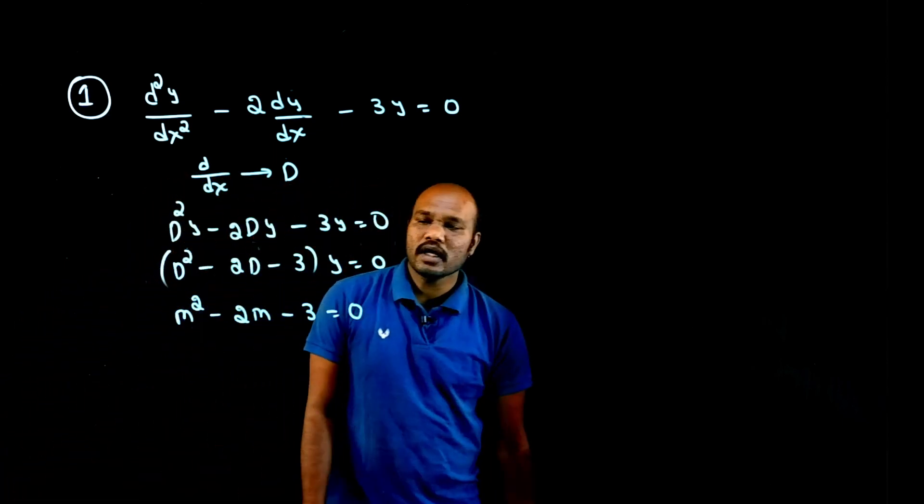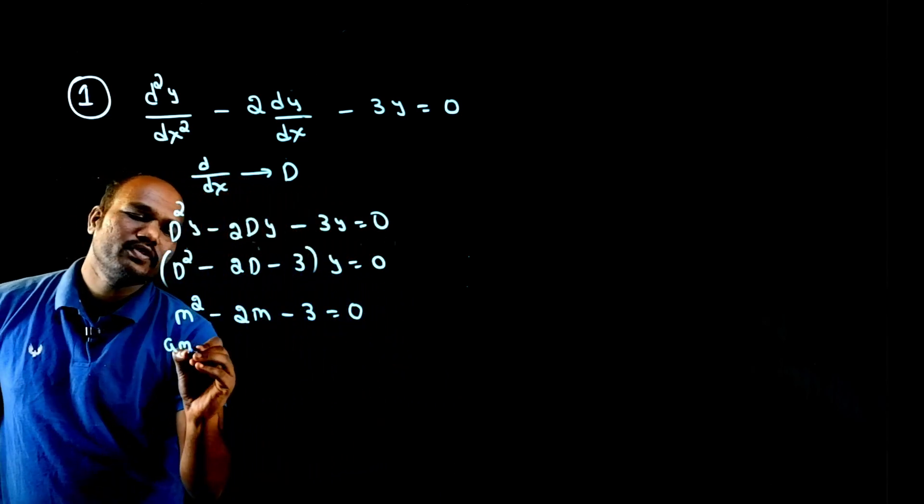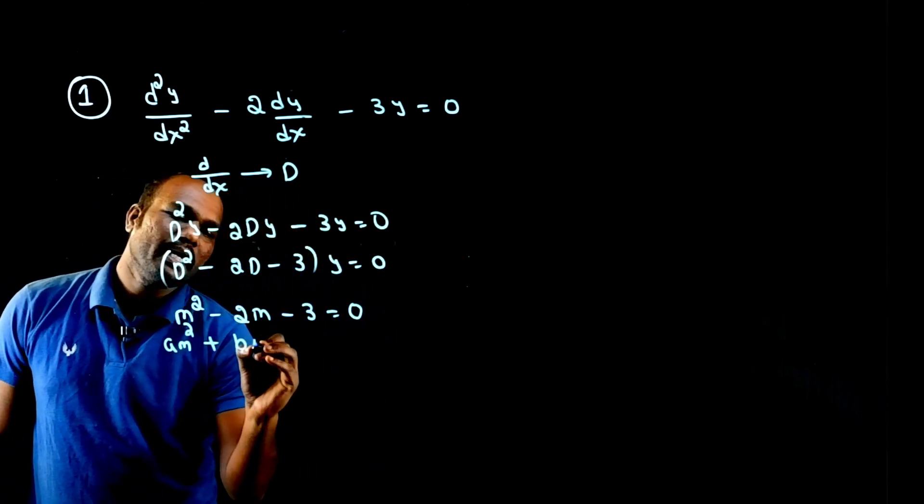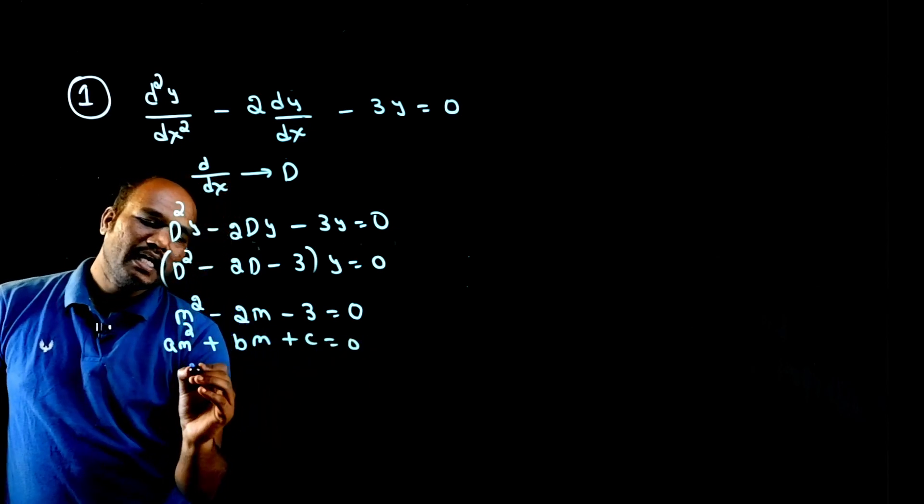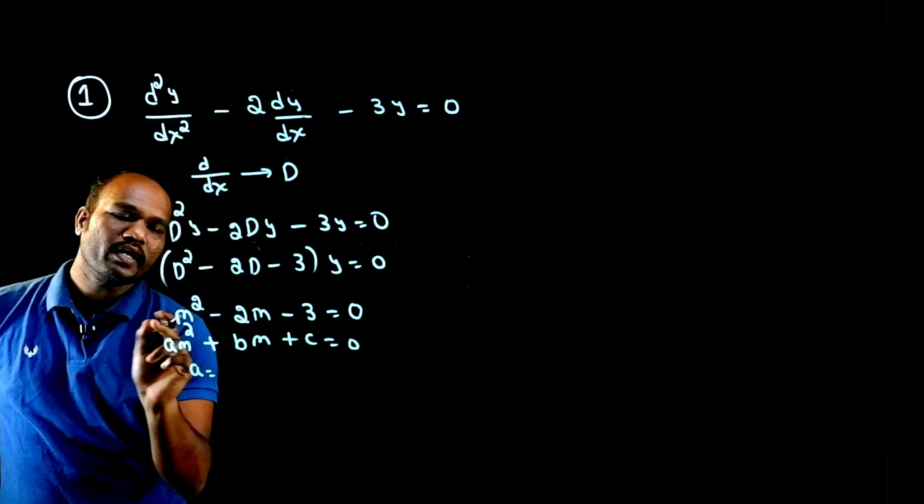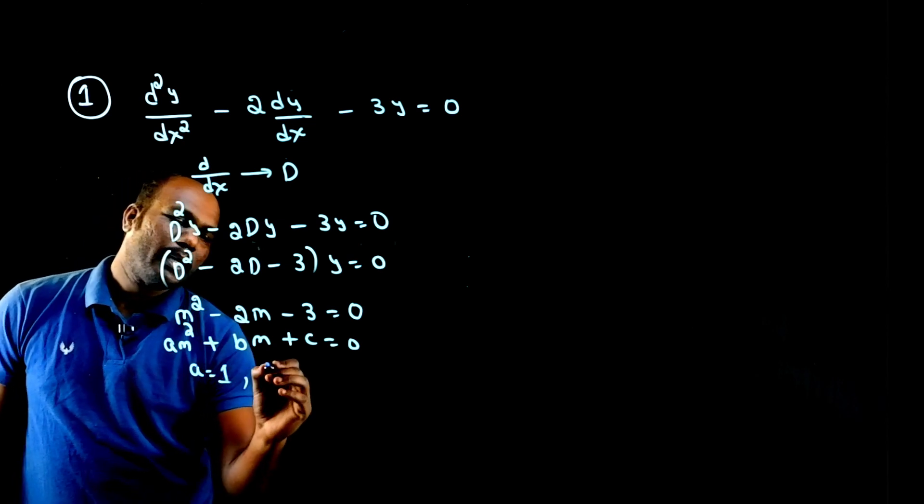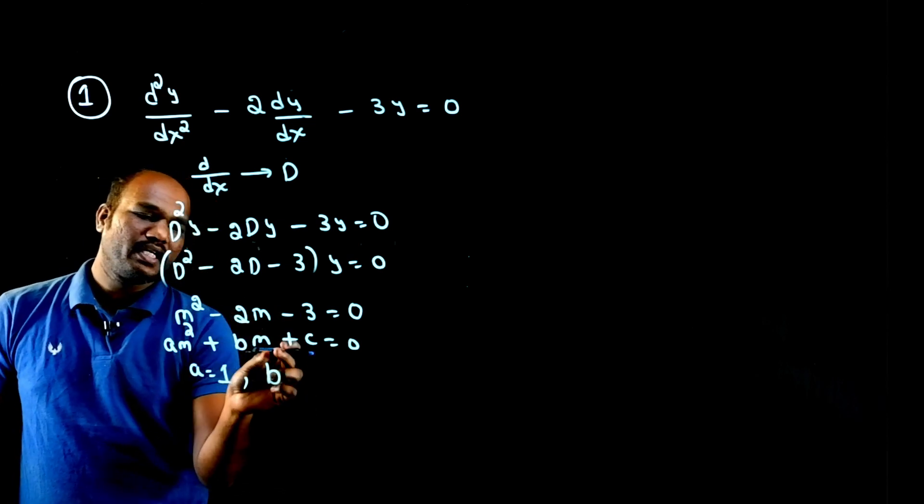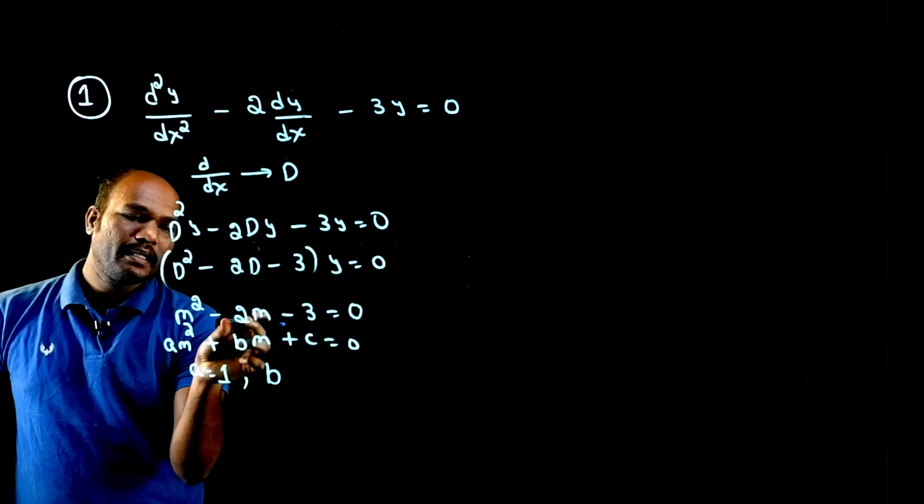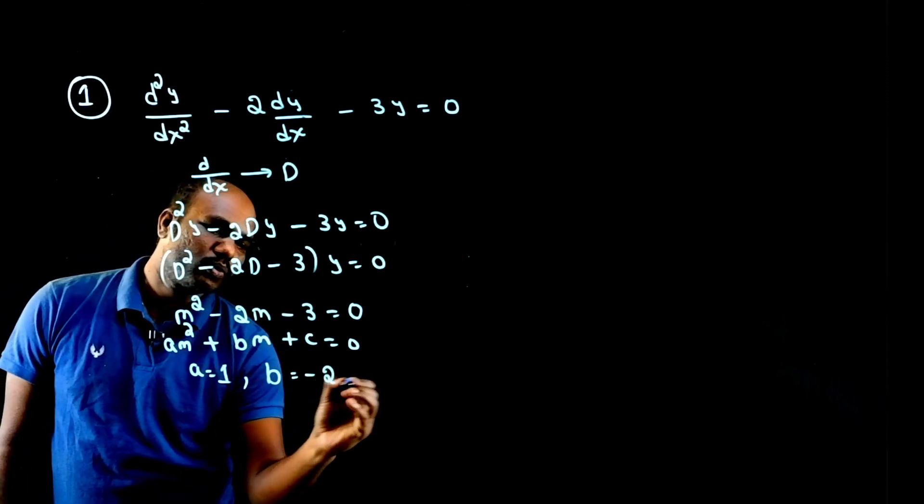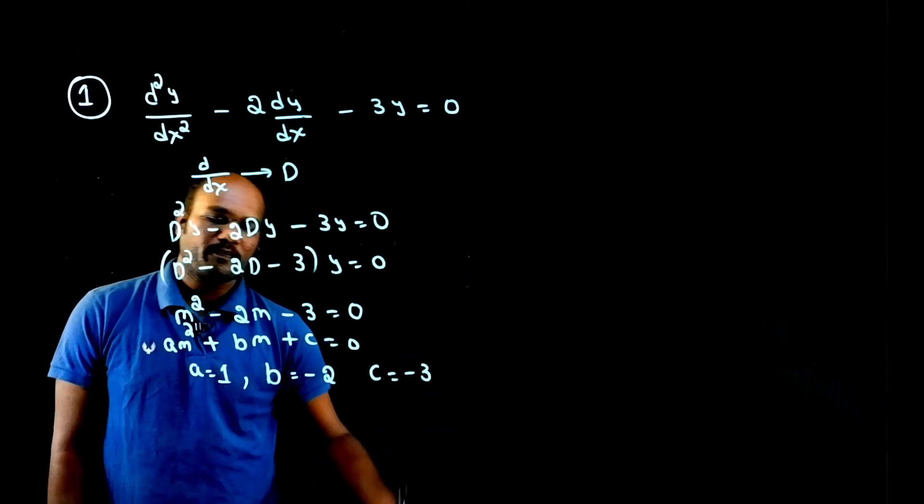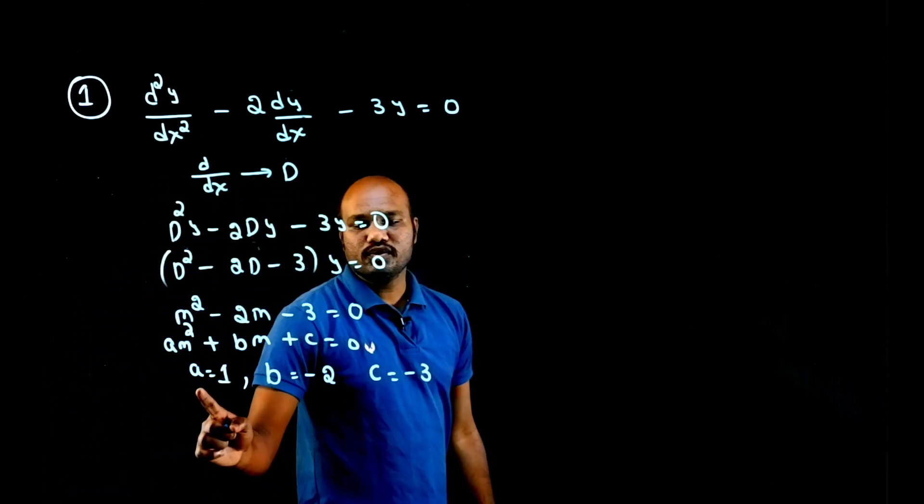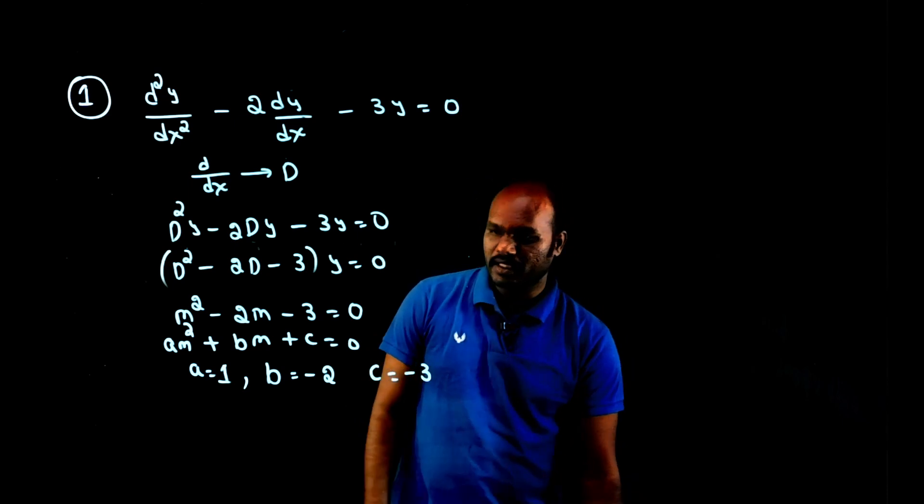Now we have to compare this with what? Am square plus bm plus c equal to 0. If I just compare, I will see that a value is m square coefficient, that is 1. B value is m coefficient that is behind m, so this will be minus 2. What will be the c value? C value will be minus 3.